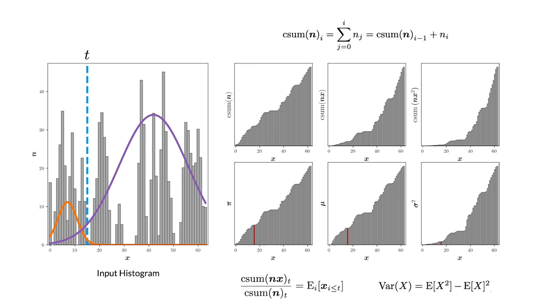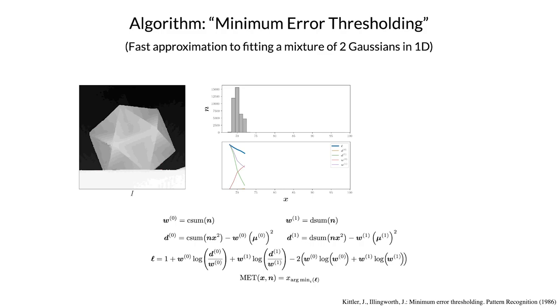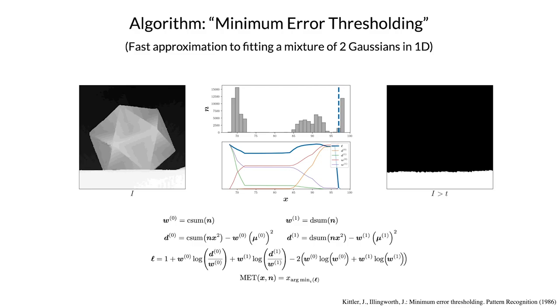So these algorithms all just work by doing a brute force scan over cuts and then returning the threshold that maximizes some objective. Here's what that process looks like for minimum error thresholding, which is a classic technique that works by approximately fitting a mixture of two gaussians in 1D and returning the threshold that maximizes the likelihood of the data. For this image, it does something reasonable, but not quite what we want.